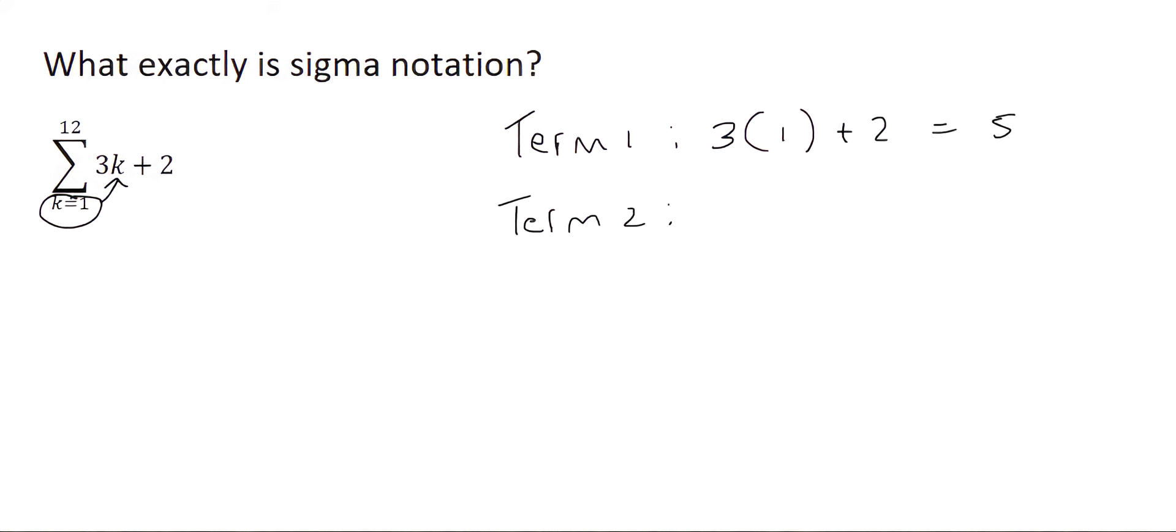To find term 2, you just add another number to that 1, which in this case is just going to be a 2. And then you say 3 times 2 plus 2, and that's going to give us 8, and then for term 3, you are going to plug in a 3 over there, and that's going to give you 11.